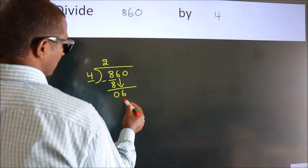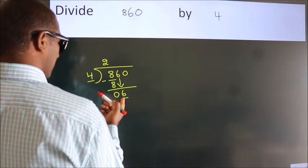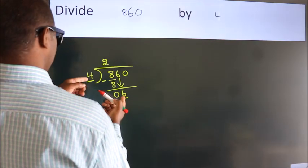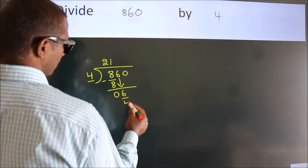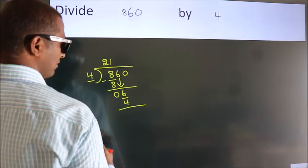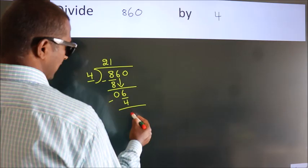So 6. A number close to 6 in the 4 table is 4 times 1 is 4. Now we subtract. We get 2.